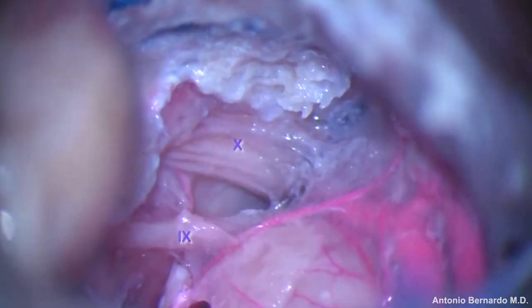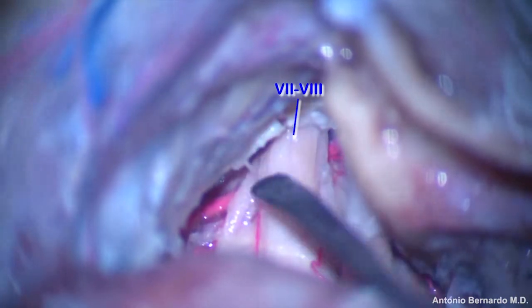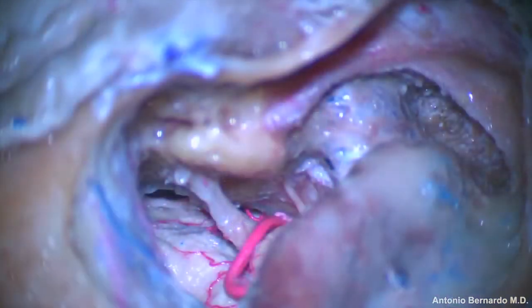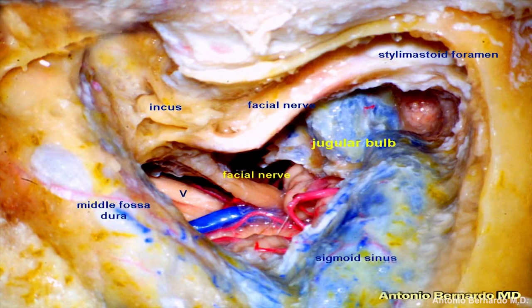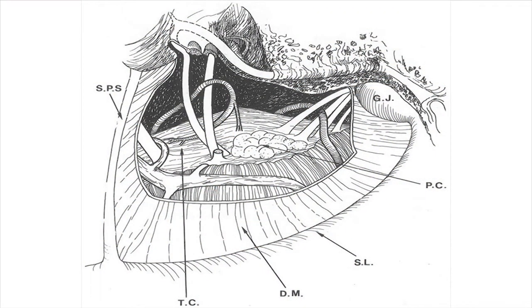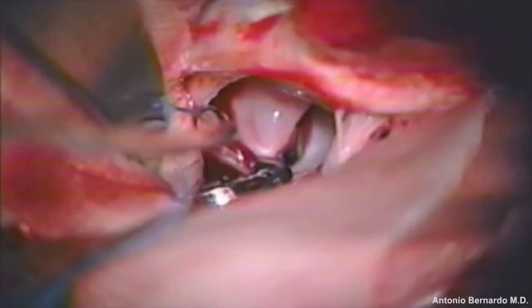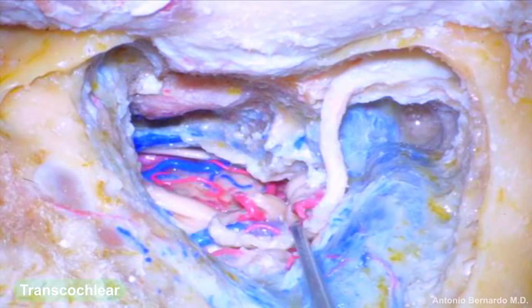Bone is opened in the infralabyrinthine space. Cranial nerves 9 and 10 are exposed, and the 7 and 8 complex are exposed. The ICA is visible and the trigeminal nerve will be exposed superiorly. The superior limit of this approach is the trigeminal nerve, the inferior limit is the jugular bulb with cranial nerves 9 and 10, and the anterior limit is the facial nerve, which is transposed in the transcochlear approach.